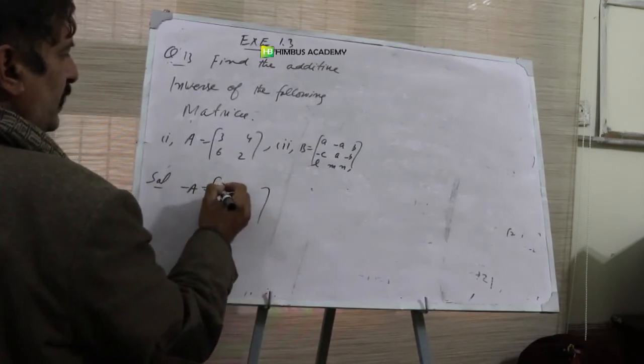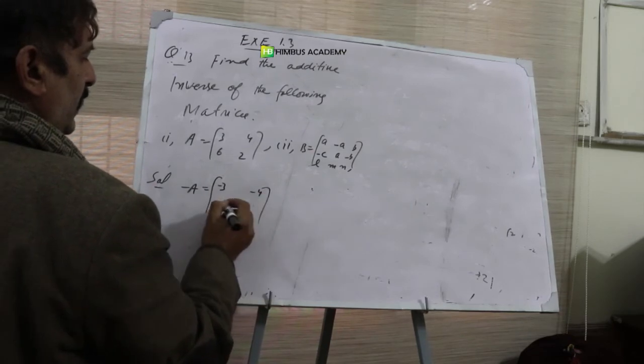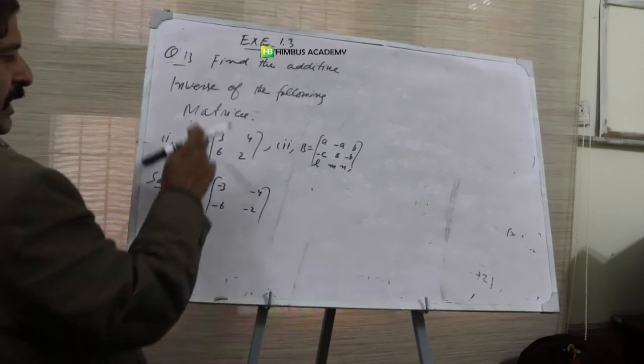So now see: minus 3, minus 4, minus 6, minus 2. This is the ADTO inverse of A.